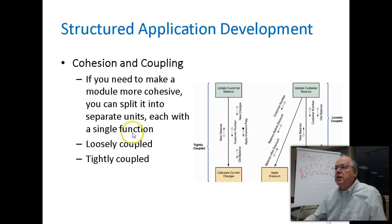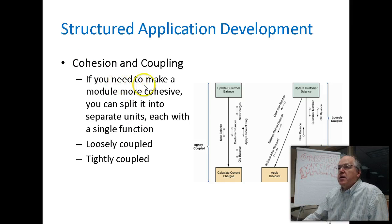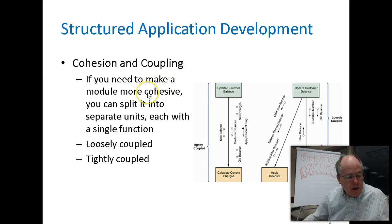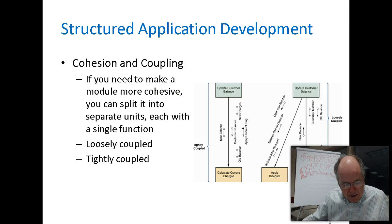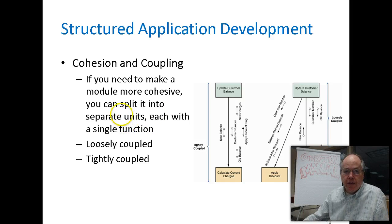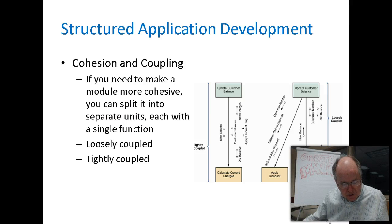Let's look at the two terms: cohesion and coupling. Cohesiveness, as defined on page 507, measures a module's scope and processing characteristics. A module that does one thing — only processes one type of data or performs a single function — has a high degree of cohesion, meaning it only does one thing.